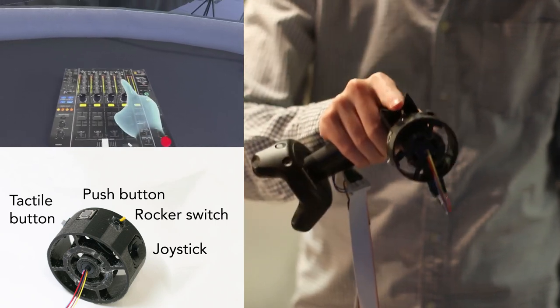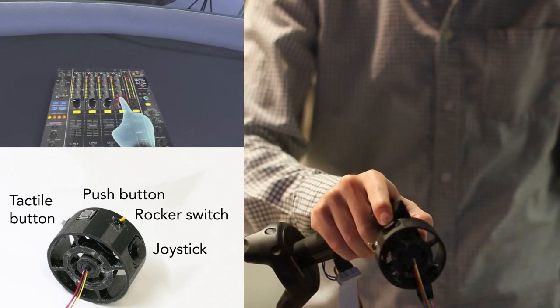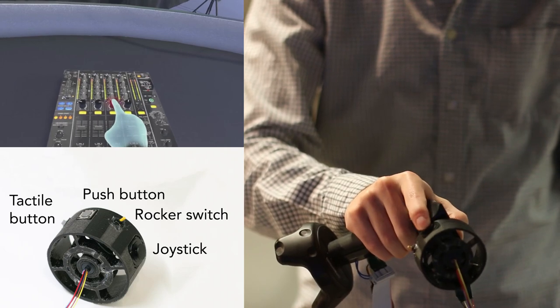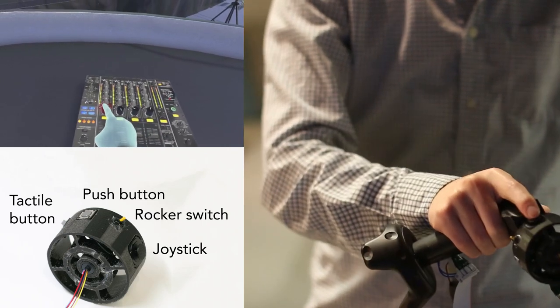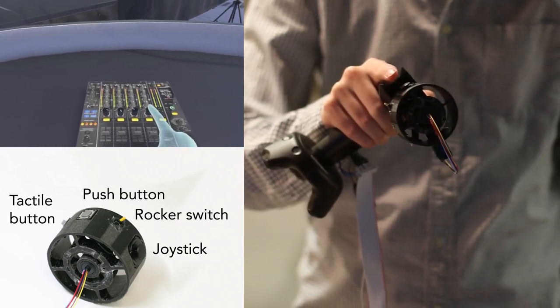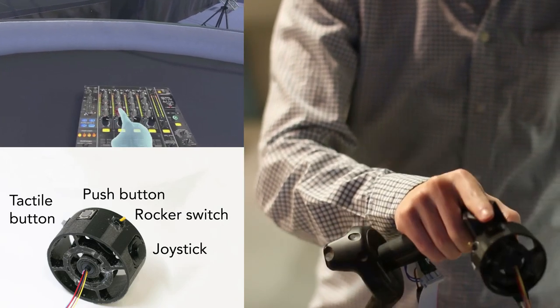In this scene, when the user approaches a virtual interactive widget, the rendering engine places an appropriate physical widget under the fingertip. Here we show how the user can physically interact with virtual knobs, buttons and switches.